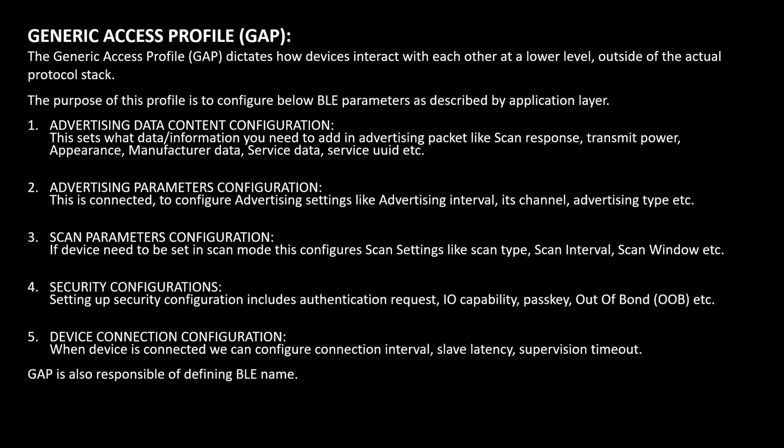The configurations that can be done using GAP include: first, advertising data content configuration — this sets what data or information you want to send in the advertising packet when your BLE device is configured as an advertiser. Second is advertising parameter configuration — this covers the actual advertising settings such as the advertising interval, how many seconds between packets, and on which channel or all channels you want to send the advertising packet.